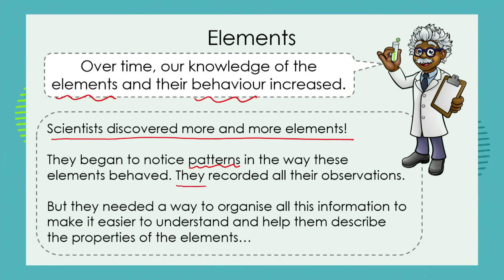For example, like sodium, there's a group of chemicals that all behave in a similar fashion when exposed to water — they all seem to explode when they come into contact with water. So some elements, although they are different, have very similar properties, qualities, or behaviors under certain conditions. And so over time, as scientists started investigating all of these different kinds of elements, they recorded all of their observations, but they needed a way to organize all this information to make it easier to understand and describe the properties of elements.